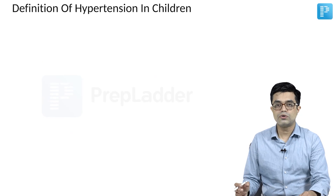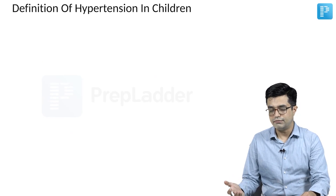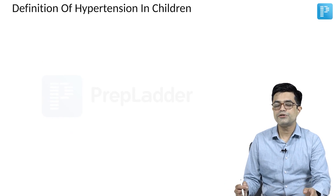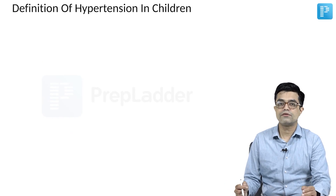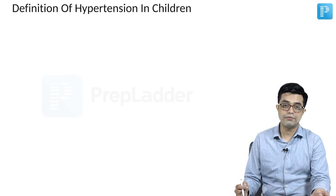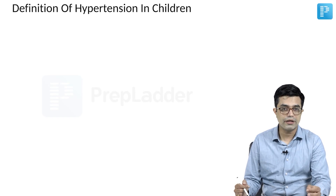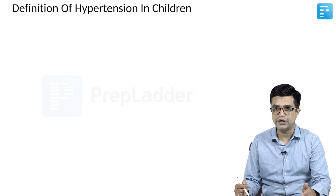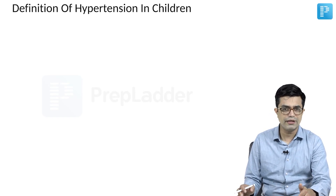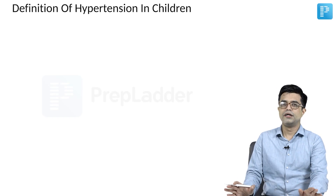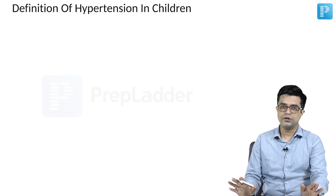We have now talked about normal BP, elevated BP, and the definition of hypertension in children. Once hypertension is defined, there are further two types: Stage 1 hypertension and Stage 2 hypertension. The definition can be a bit confusing, but if you try to understand it with a cool mind, it will all come to you.